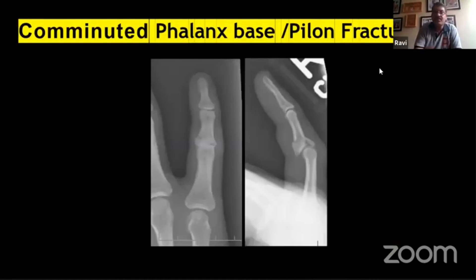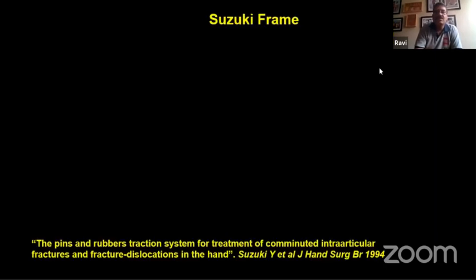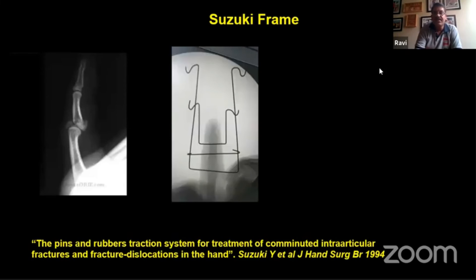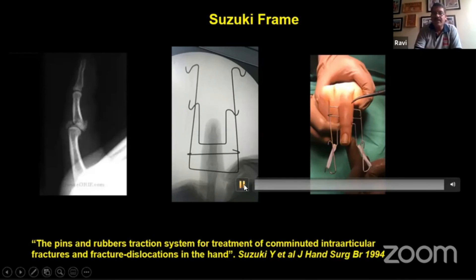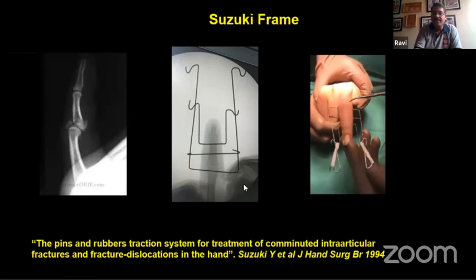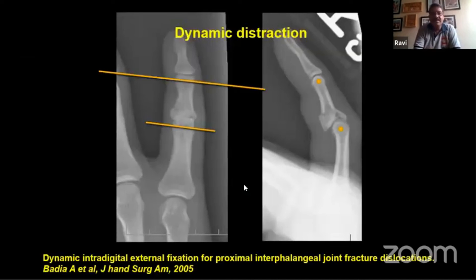For comminuted fractures of the base of the phalanx — pylon-type fractures — Suzuki, in 1994 published in the Journal of Hand Surgery British, described an external fixator providing dynamic distraction using contoured K-wires and rubber bands. Three transversely passed K-wires are bent to form the frame; rubber bands provide a dynamic construct allowing early mobilization. A further form of dynamic distraction was described by Badia in 2005 — the Badia frame — using two transversely crossed wires with a similar frame construct.